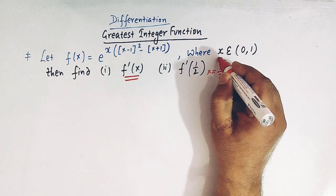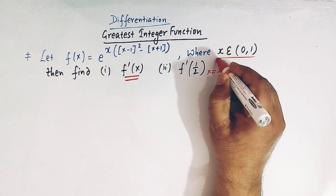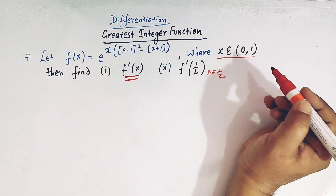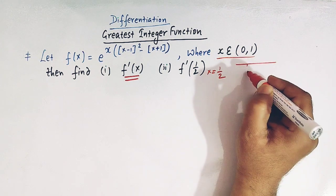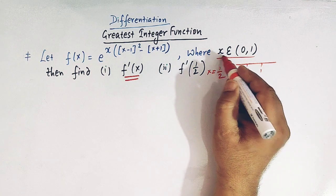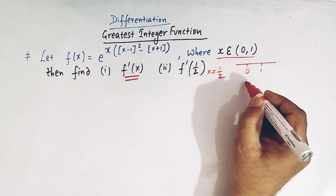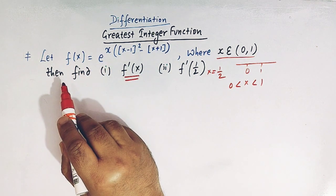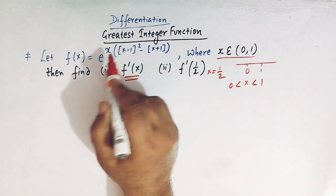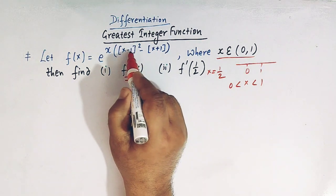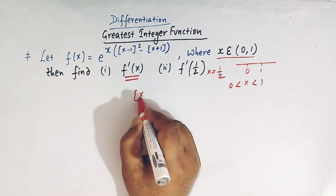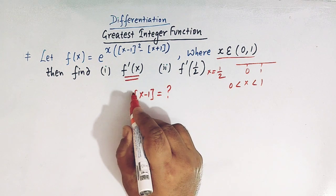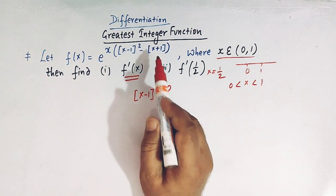Here is the important line: x belongs to the open interval 0, 1, meaning x lies between 0 and 1. So let us start. We will take the expression greatest integer of x minus 1 and assign a value to it.